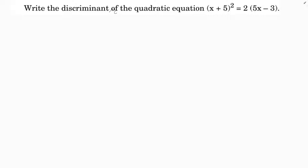Find the discriminant of the given equation: (x + 5)² = 2(5x − 3).